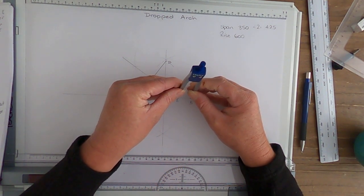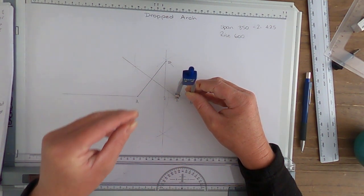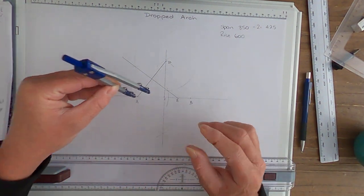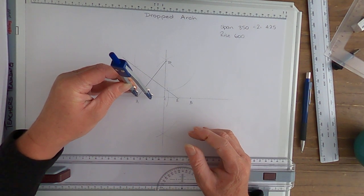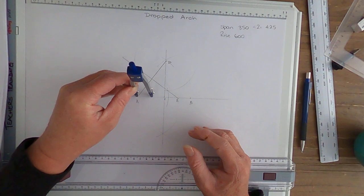So I go B to E and get that distance, and I'm going to transfer it to A to mark F.